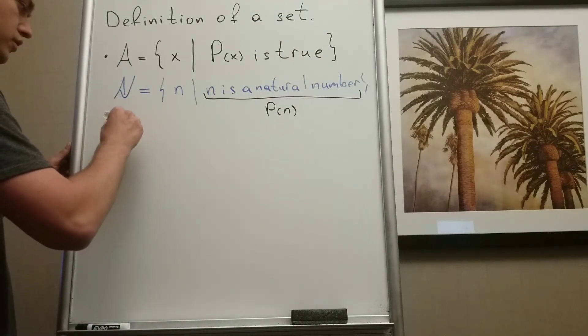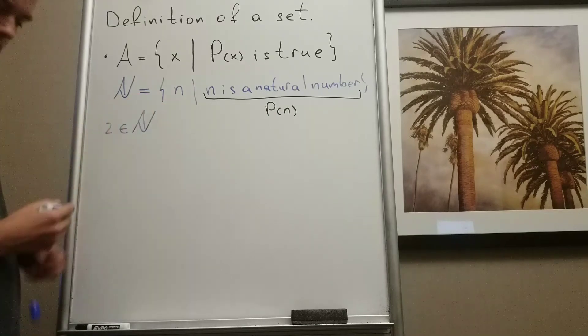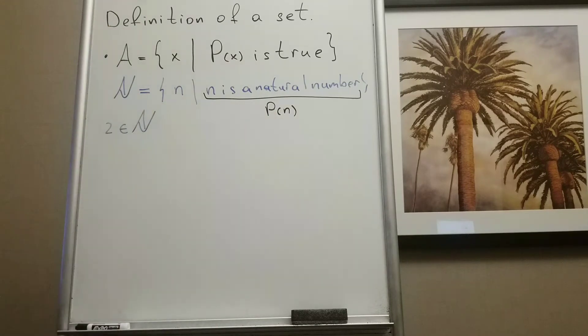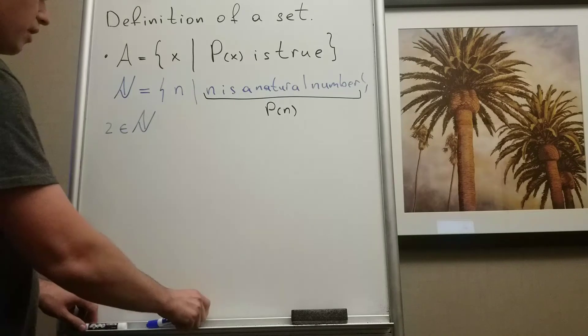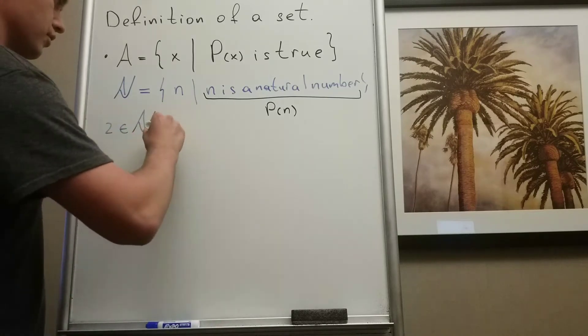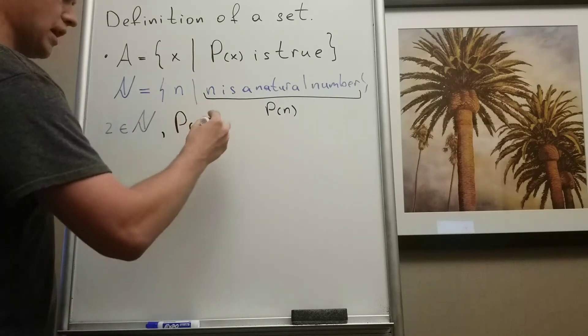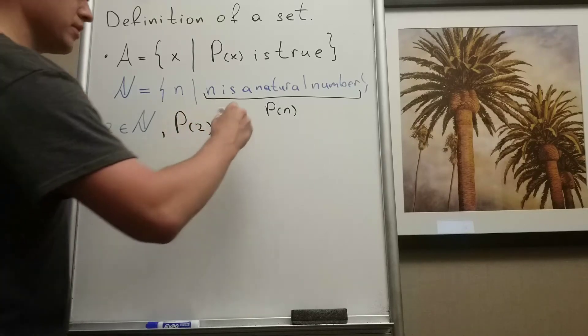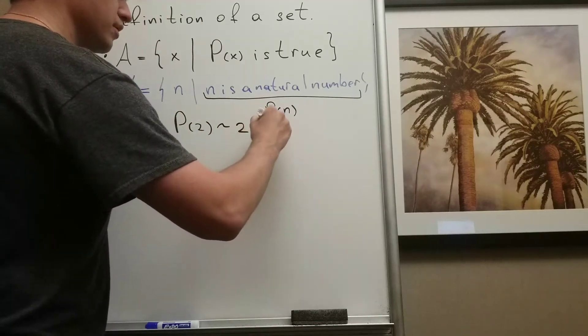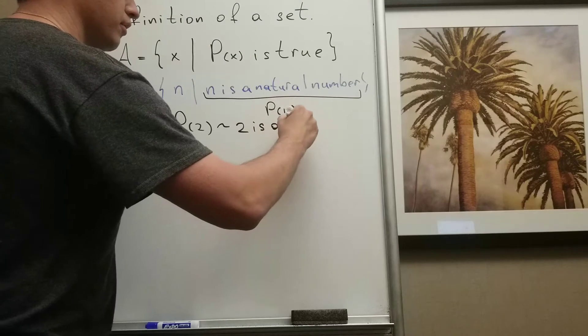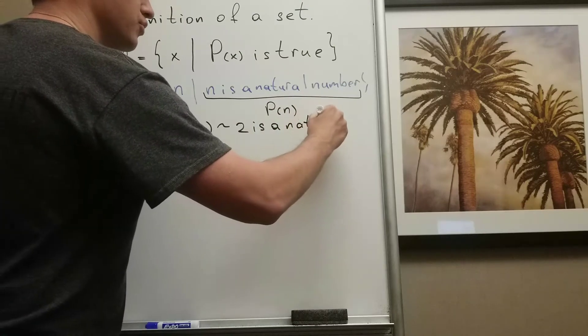2 belongs to natural numbers, and how I'm going to check if 2 belongs. If 2 belongs to natural numbers, I'm going to consider the statement P of 2. And the statement P of 2 is equivalent to: 2 is a natural number. And we know that this is true.